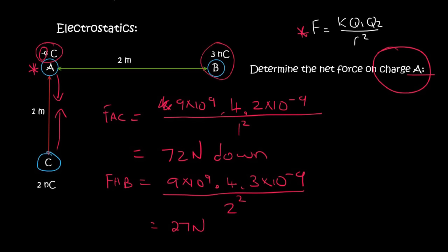Now B is positive and A is negative. So they will attract each other. But we are interested in A. So it means that A will move to the right.